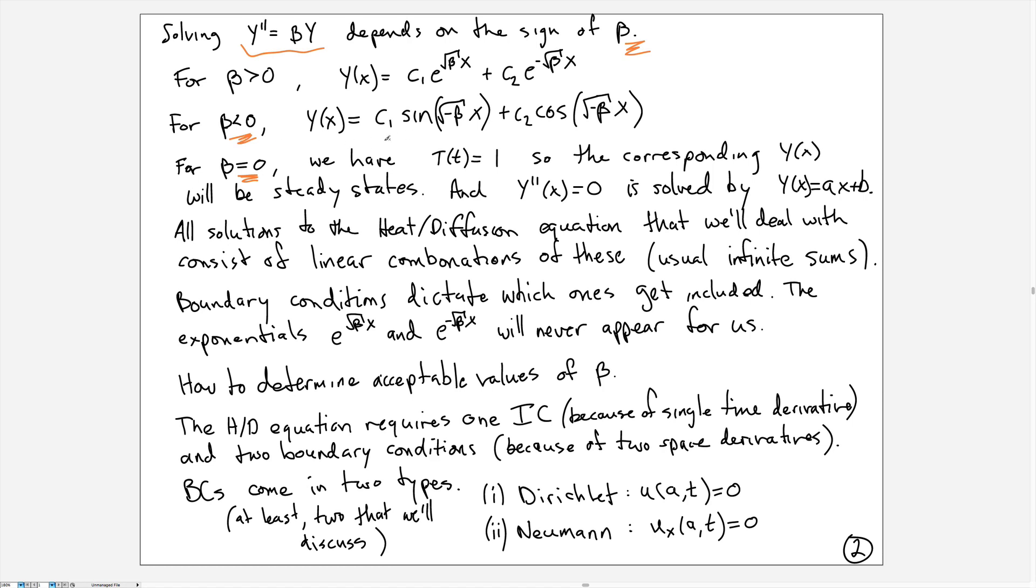The more useful ones happen when β is negative or when β equals zero. When β is negative, we can put a negative sign in front of the β, square root it, and one of the solutions will be sin(√(-β)x), and the other will be cos(√(-β)x). These will be very useful, and we're going to find different values of β and add all those different functions up with different betas. That will be how we build our solution.